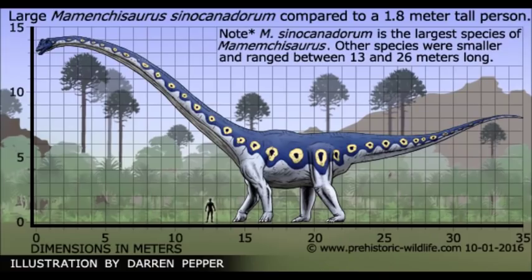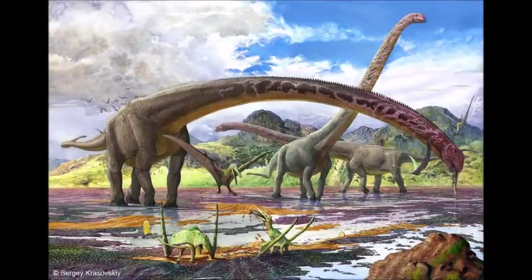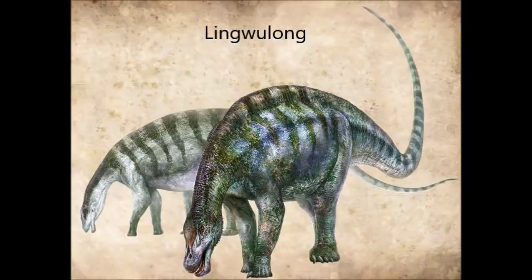A bit more derived than these is a clade called Mamenchisauridae, all from China, who are well known for their extremely elongate necks. Previously, it was hypothesized that geographic isolationism was the reason Mamenchisaurids were found nowhere else in the world, being separated from the rest of Asia by a sea. However, in 2018, researchers discovered a diplodocoid called Lingwulong that has cast doubt on this hypothesis. This discovery means that the Mamenchisaurids weren't totally isolated, that diplodocoids dispersed into East Asia earlier than previously suspected, and that the major clades of sauropods diverged about 15 million years earlier than previously thought.